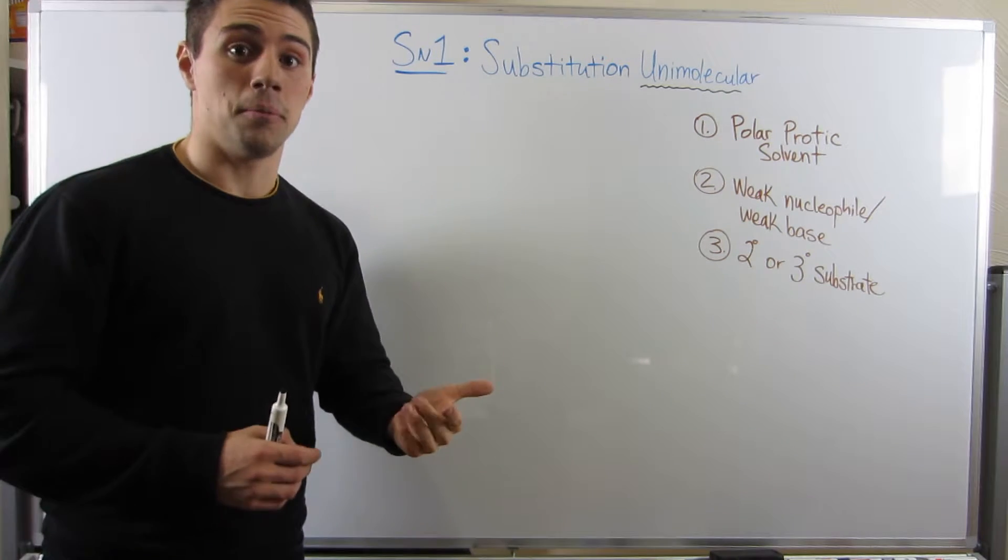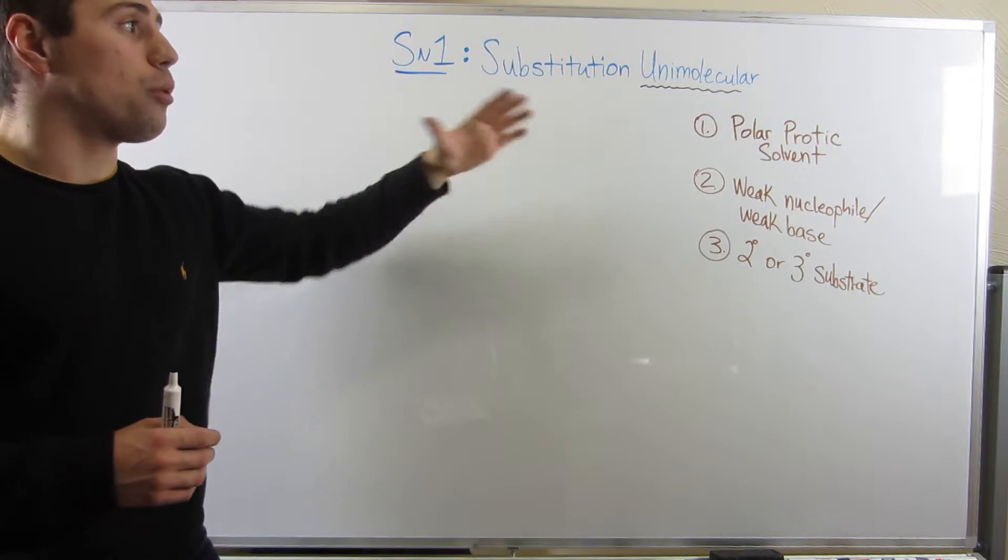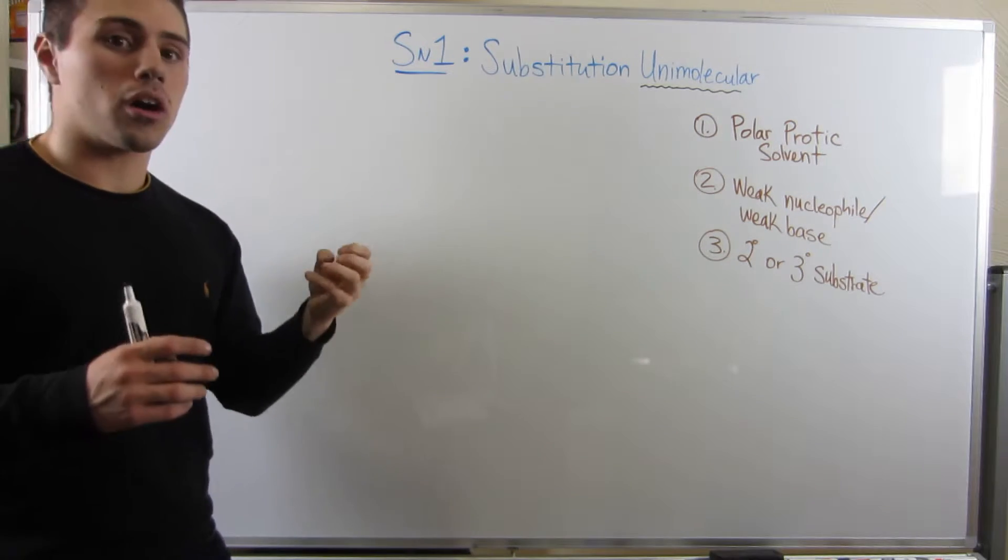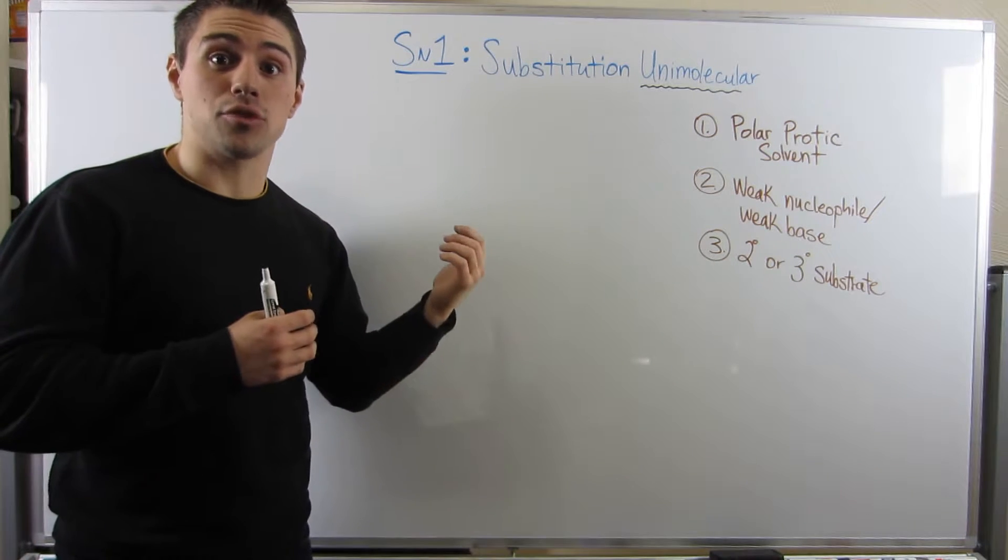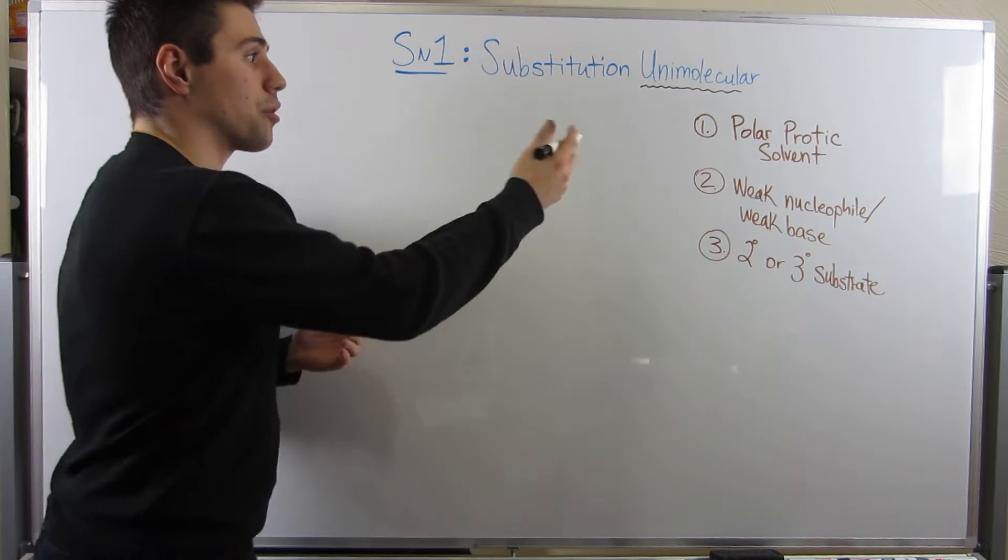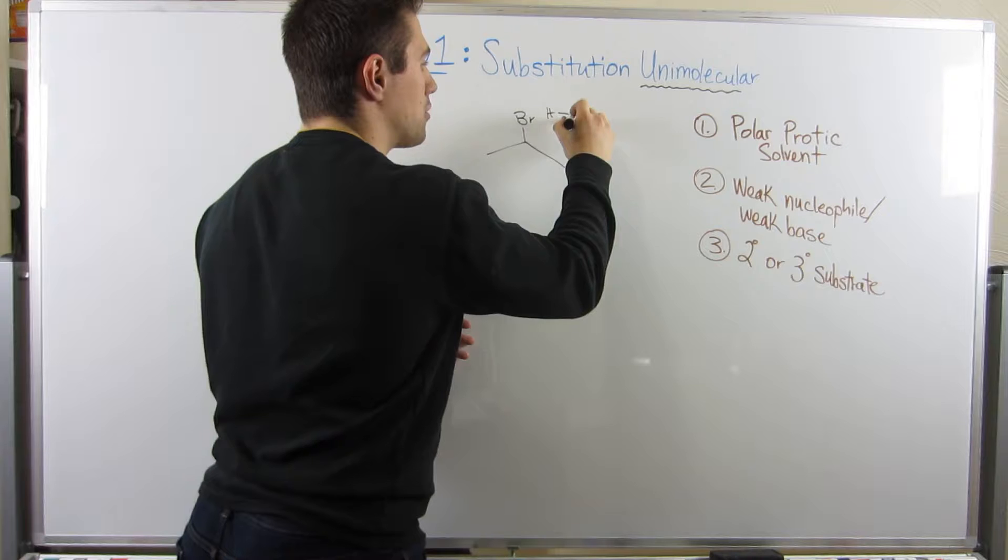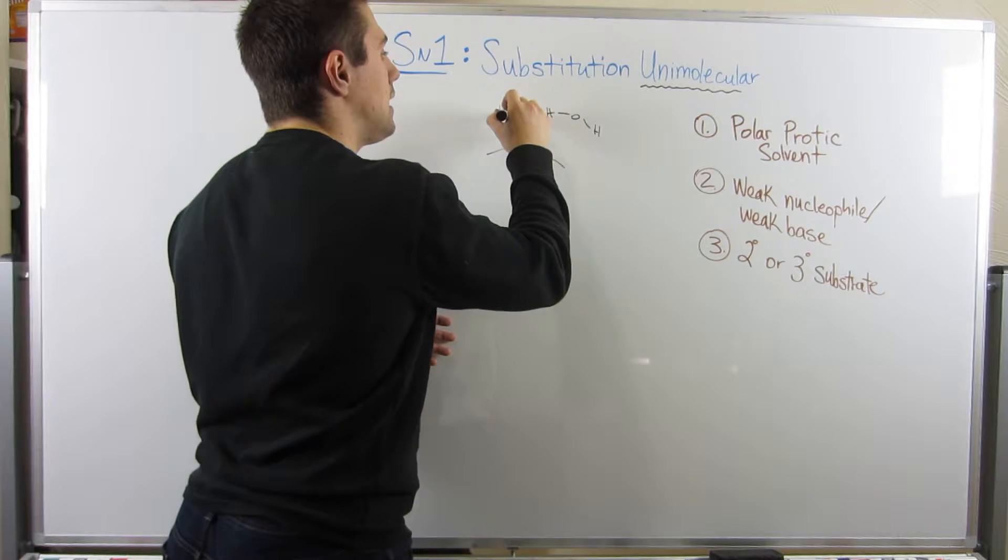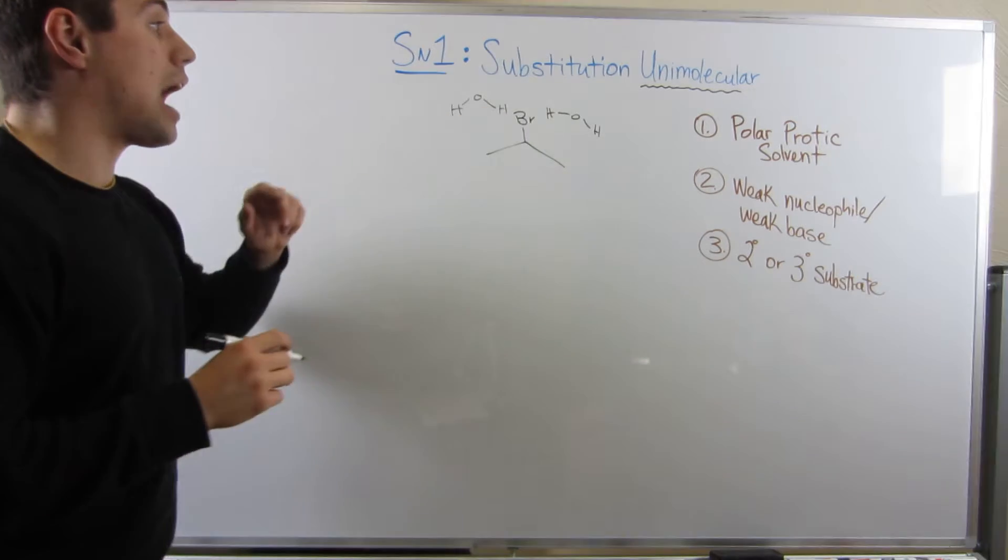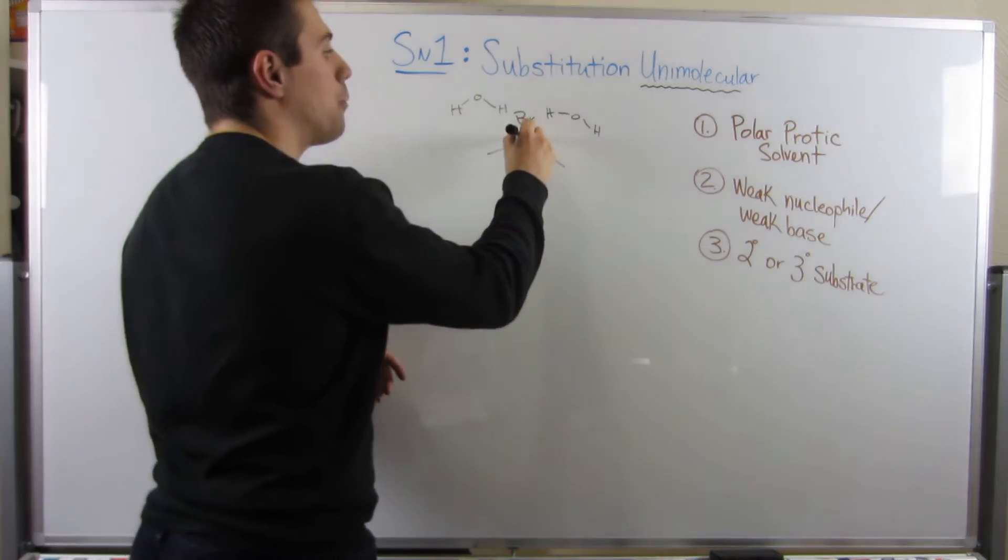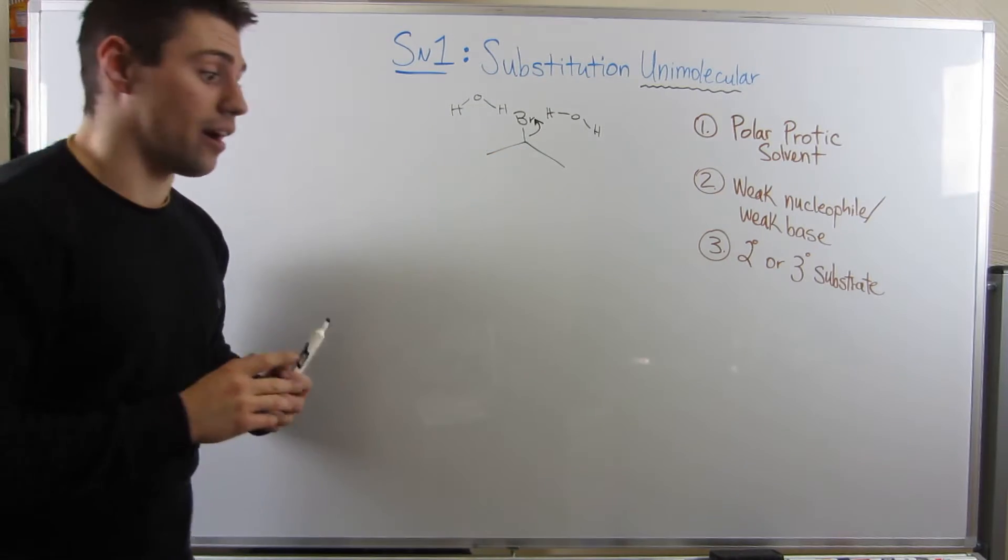So remember, in SN2 and E2, we were using a polar aprotic solvent, because remember, if we had a polar protic solvent, our nucleophile gets trapped. You saw that through solvolysis. But remember, with our polar protic solvent, if we had the same situation we just kind of handled, we need that partially positive hydrogen, that protic aspect of the solvent to help wean off our leaving group to then form our carbocation.